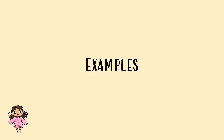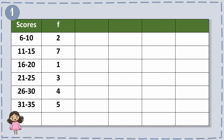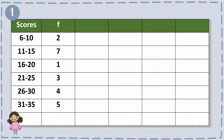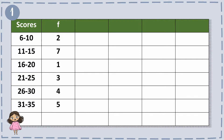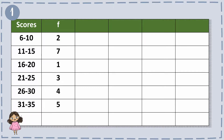We can understand this more through the following examples. For example number one, you have the scores of 6 to 10, 11 to 15, 16 to 20, 21 to 25, 26 to 30, and 31 to 35, with the frequencies of 2, 7, 1, 3, 4, and 5. There are four other columns in the table — Lb, x, fx, and cf — and we must complete these to find the three M's.